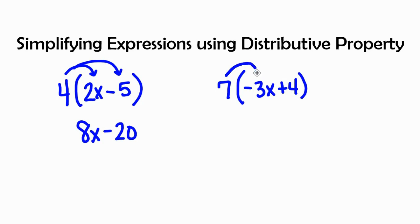7 gets multiplied by a negative 3x because we are including the sign in front of that term. So 7 times a negative 3x is negative 21x.